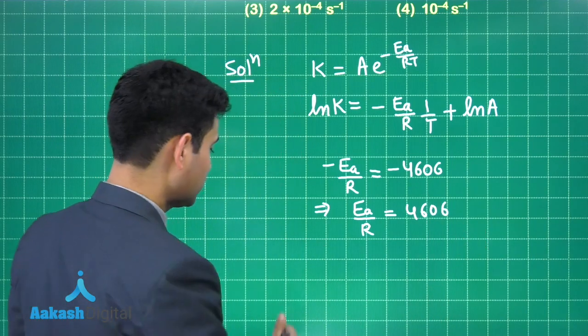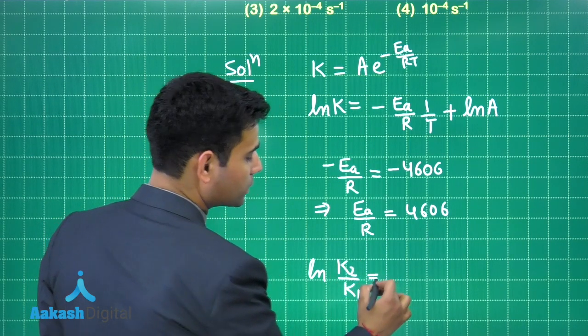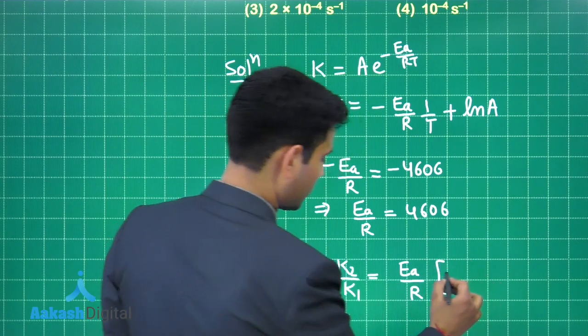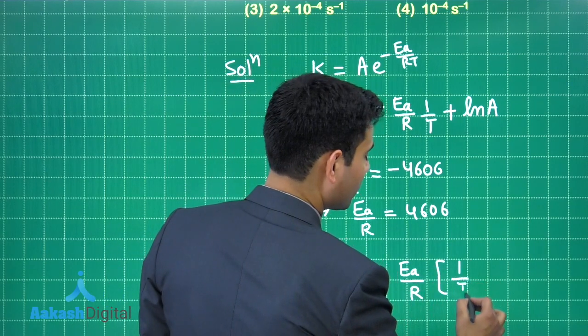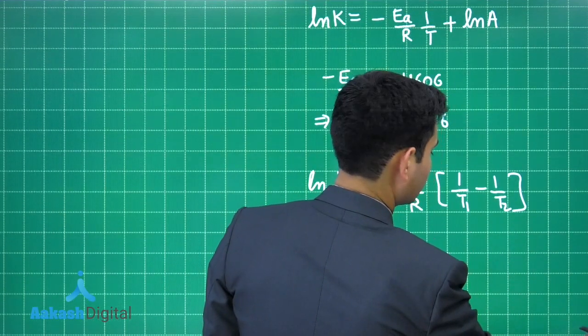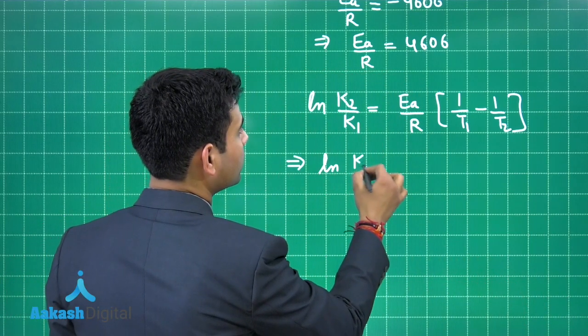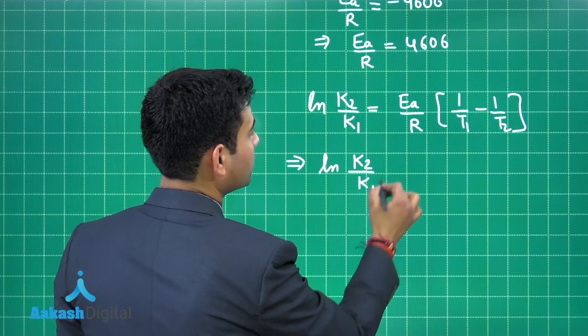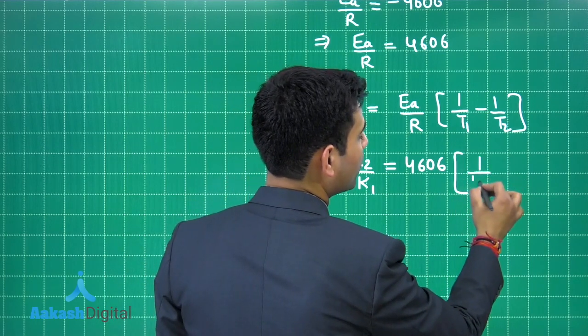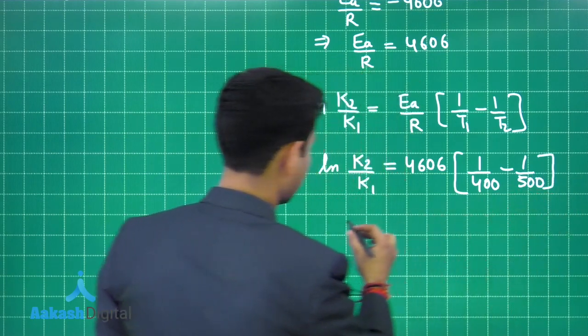Now, we also know that natural log K2 by K1 is equals to E upon R into 1 upon T1 minus 1 upon T2. So, from here we can write that natural log K2 by K1 is equals to 4606 into 1 upon 400 minus 1 upon 500.